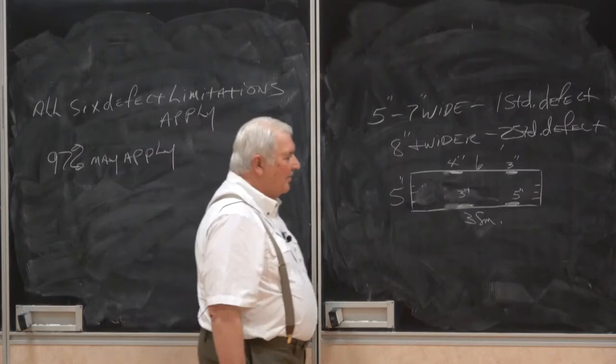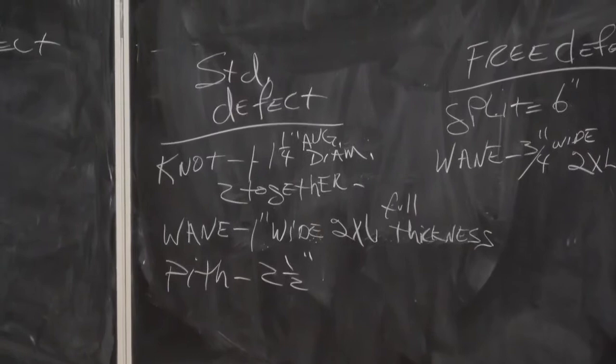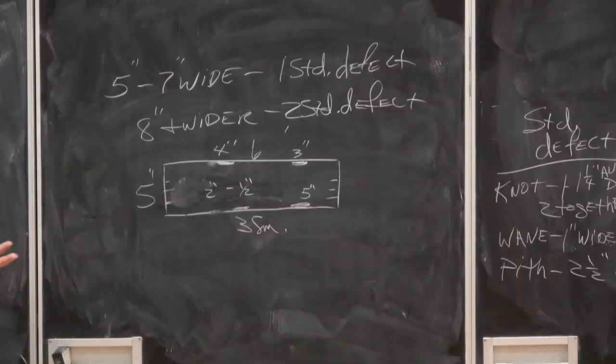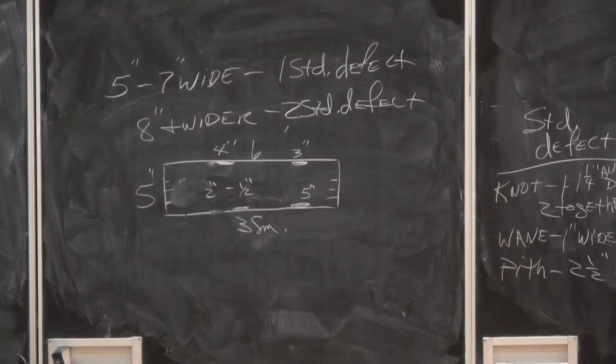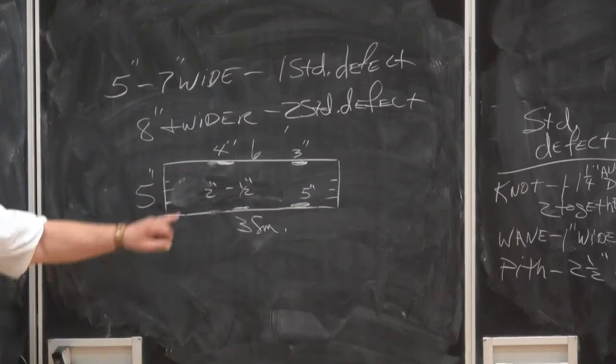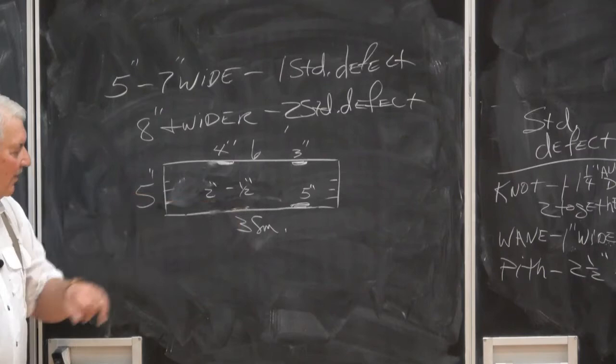Now, pith. Two and a half inches of pith - you could have two inches here and a half inch there, or whatever. Just add it up together. Once you get to two and a half inches of pith, that's one standard defect. Keep in mind, boxed or showing - good luck trying to find it if it's boxed, but that's how you deal with it. And where you're at right now, that board still grades FAS. As crummy as that looks, it grades FAS. You've got six inches of free split, 12 inches of free wane, one standard defect pith - FAS.